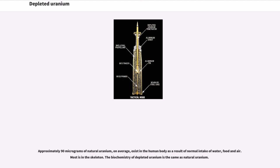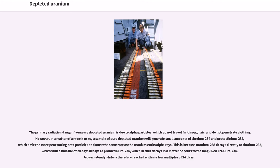The biochemistry of depleted uranium is the same as natural uranium. The primary radiation danger from pure depleted uranium is due to alpha particles, which do not travel far through air and do not penetrate clothing. However, in a matter of a month or so, a sample of pure depleted uranium will generate small amounts of thorium-234 and protactinium-234, which emit the more penetrating beta particles at almost the same rate as the uranium emits alpha rays. Uranium-238 decays directly to thorium-234, which with a half-life of 24 days decays to protactinium-234, which in turn decays in a matter of hours to the long-lived uranium-234. A quasi-steady state is therefore reached within a few multiples of 24 days.